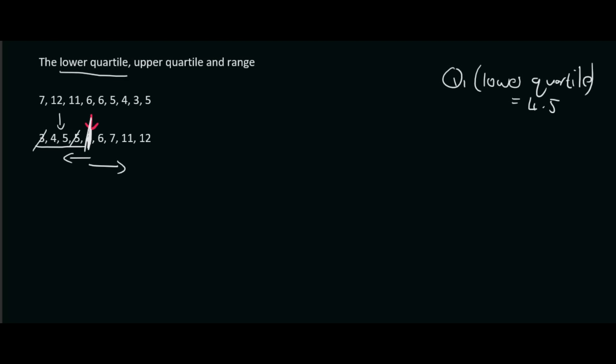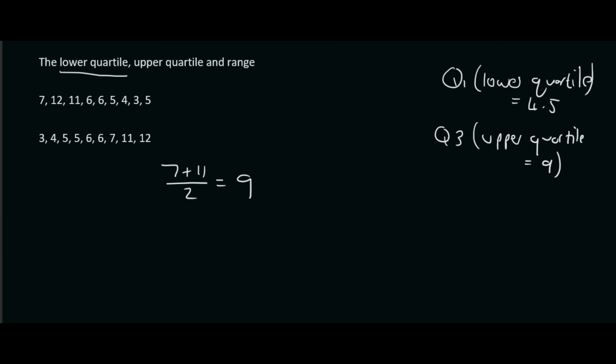If we look at the upper quarter, we cross off values and we're left with 7 and 11. So we add them together: 7 plus 11, divide by 2, and that gives us 9. So Q3, which we can also call the upper quartile, is equal to 9. So we've just divided our data into quarters.